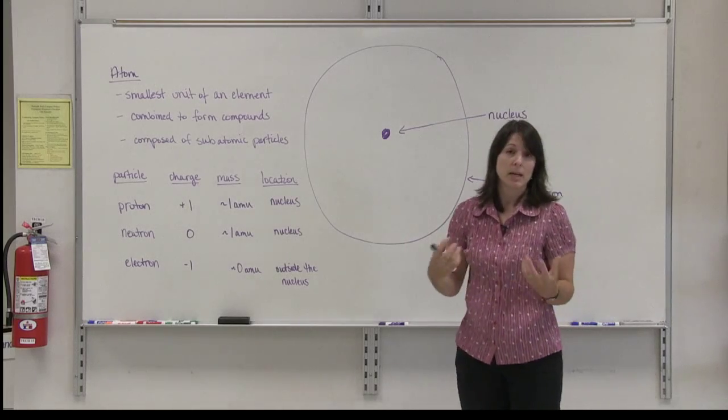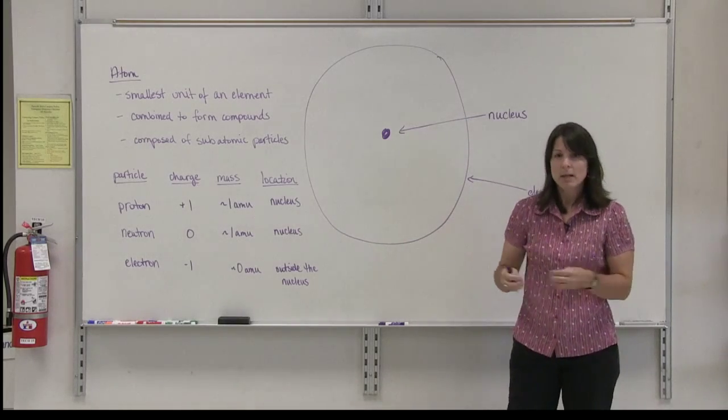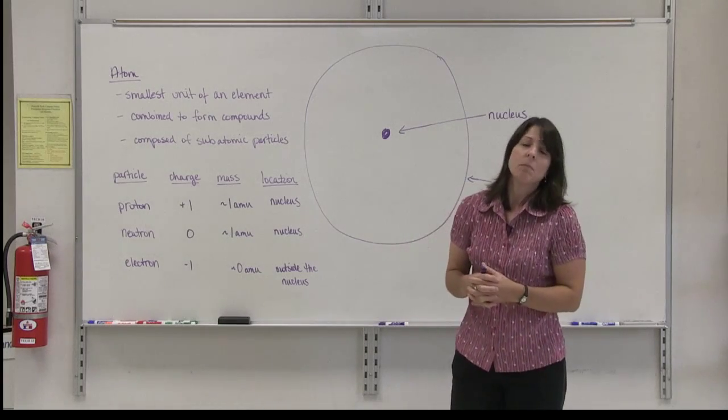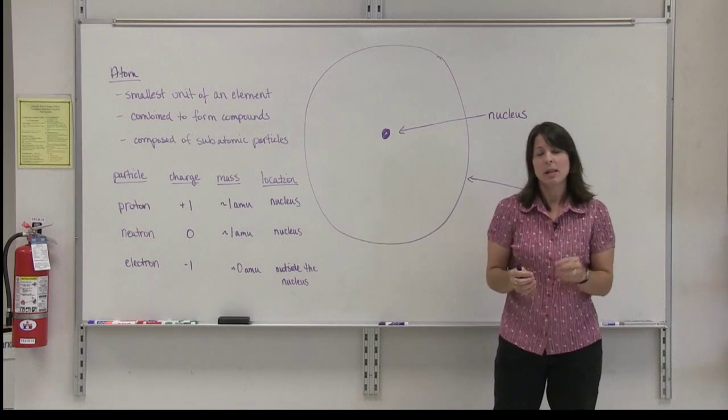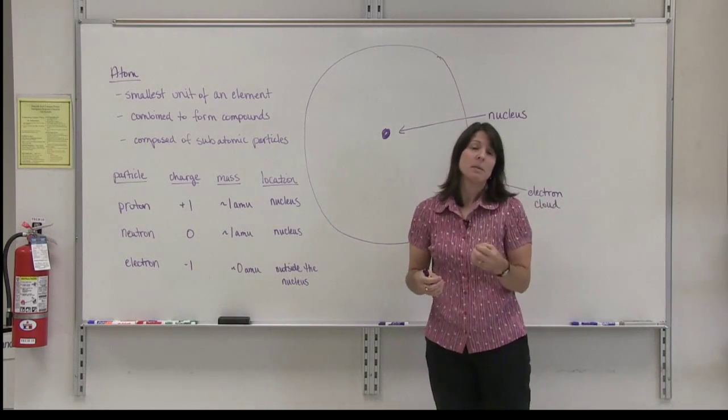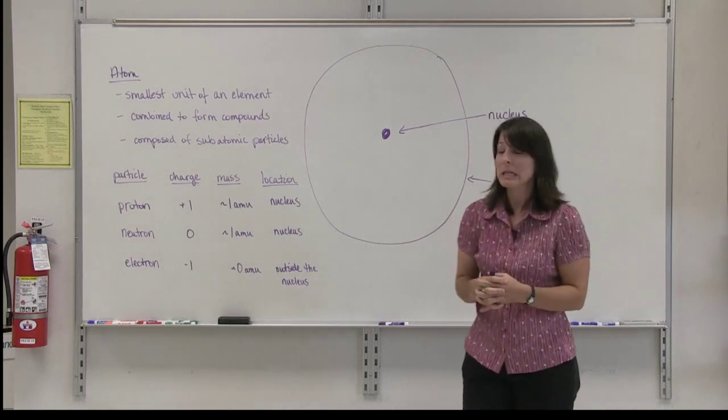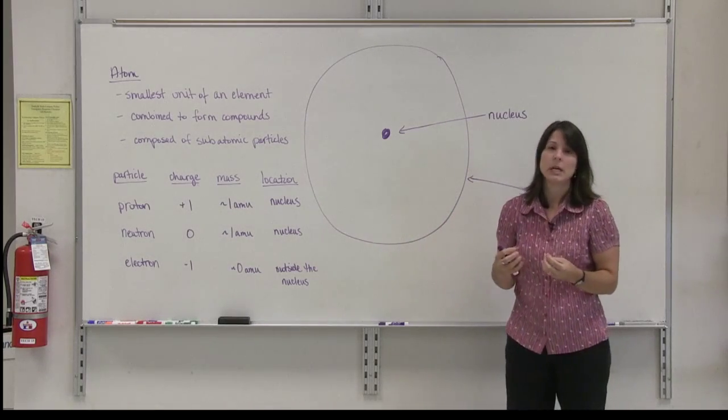So if you have an element like copper and you cut it up into the smallest possible pieces that you can possibly cut up, you still would not be to that level of an atom. An atom cannot be seen with the naked eye. You would need a special microscope to see an atom. So they're very, very tiny.